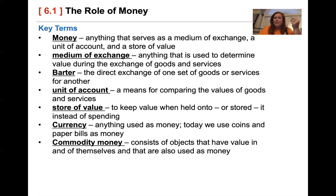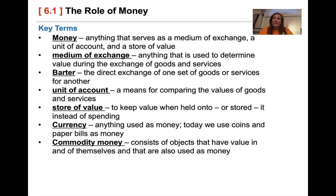Commodity money is any object that has value in and of itself as well as serving as money. You might say gold, diamonds, or diamond rings — these have value other than just being used as money. A cow has value to a farmer. If you look on the stock exchange, you'll see commodity stocks like bacon, cattle, and oranges. Oranges have value other than money because they're food — they're nutritious.